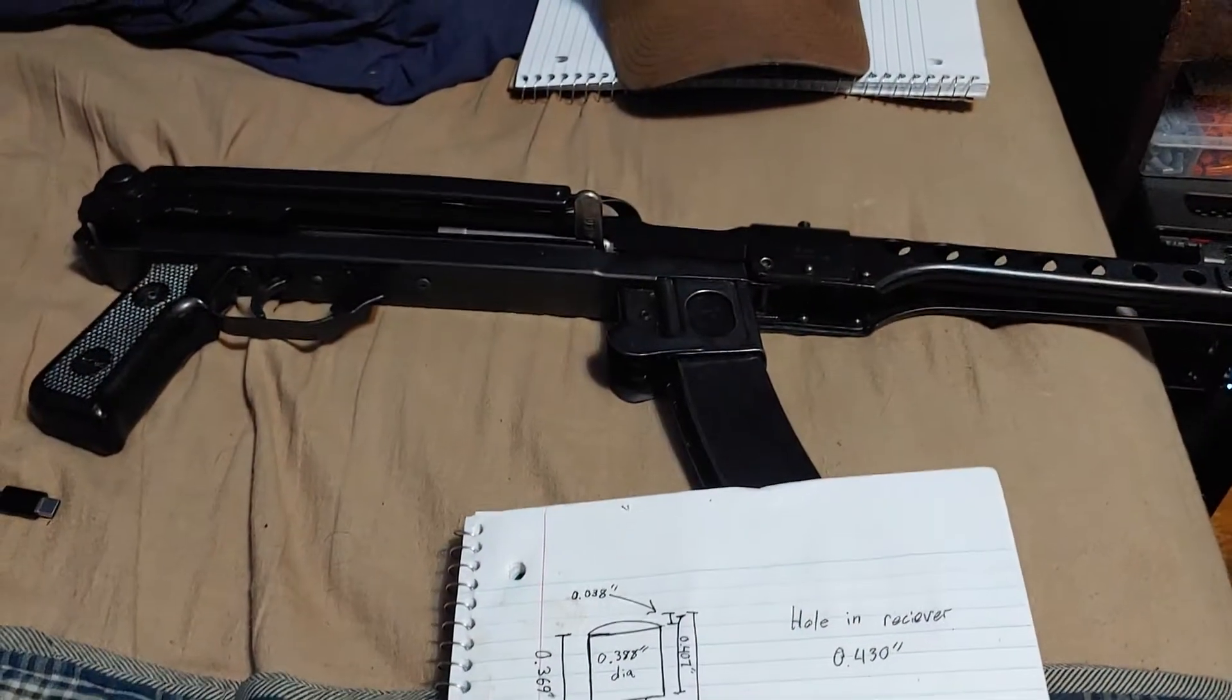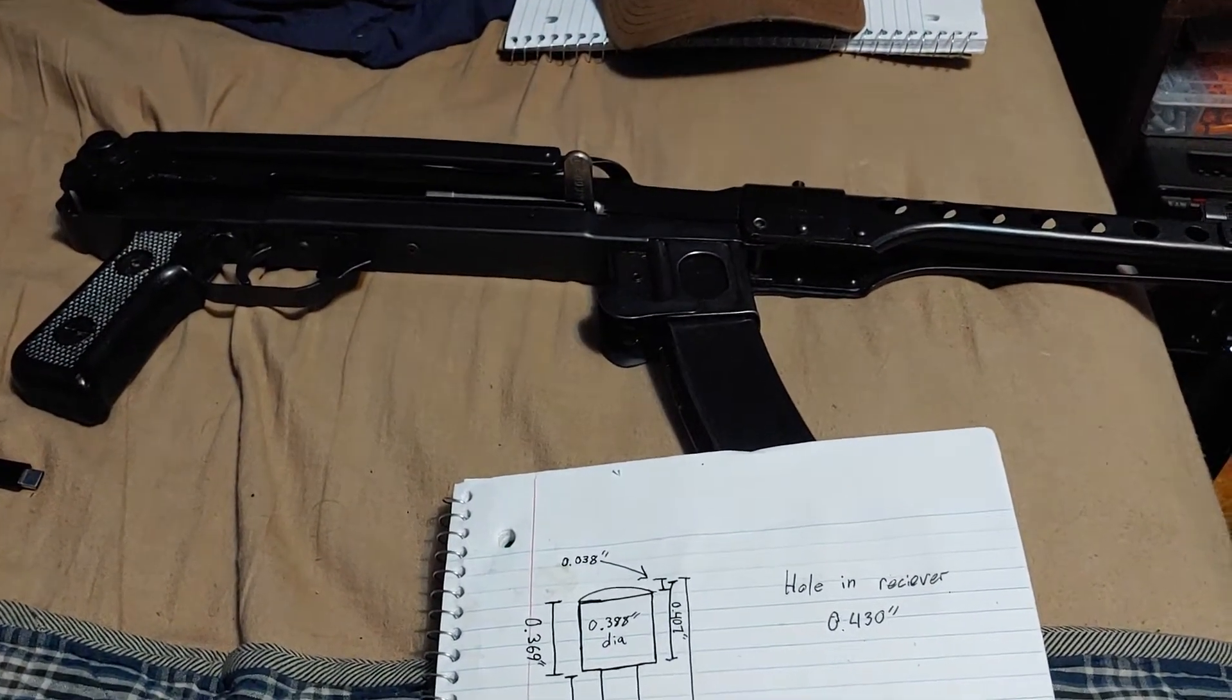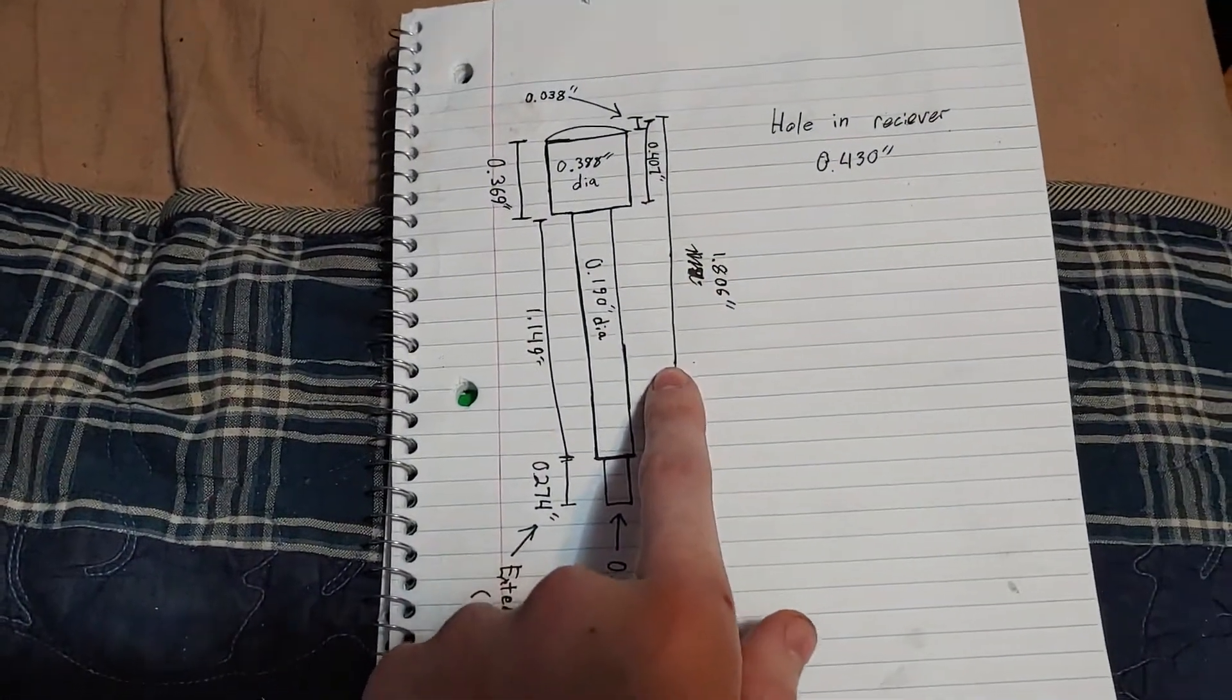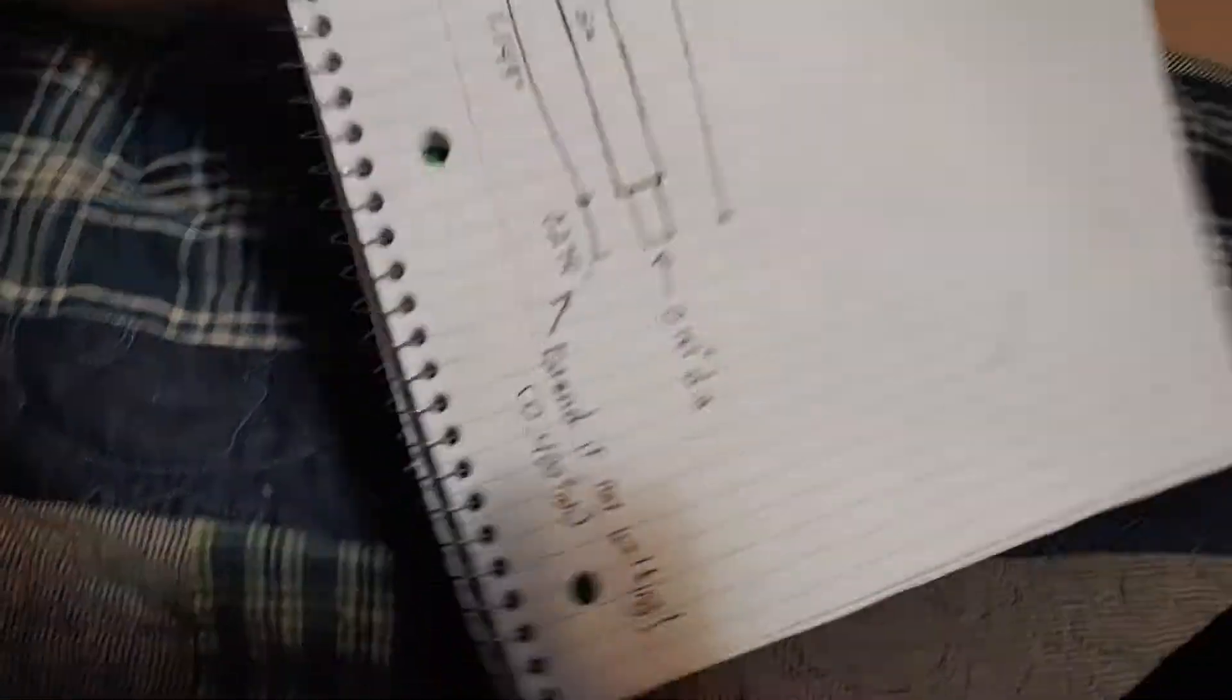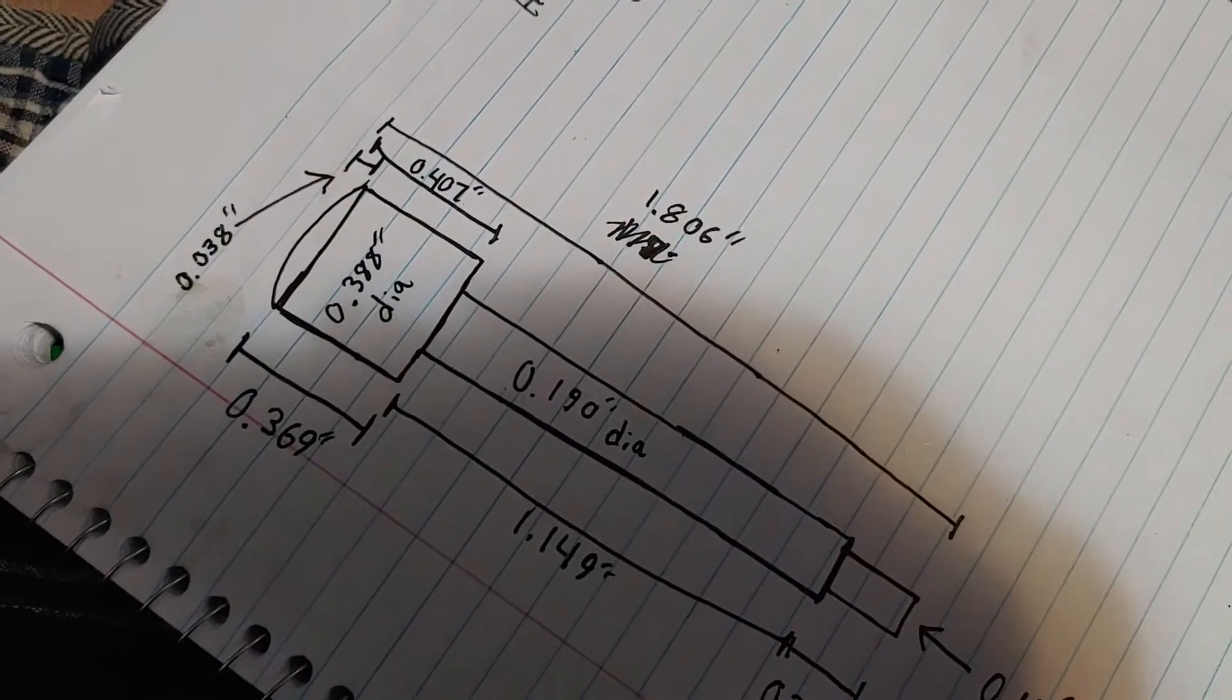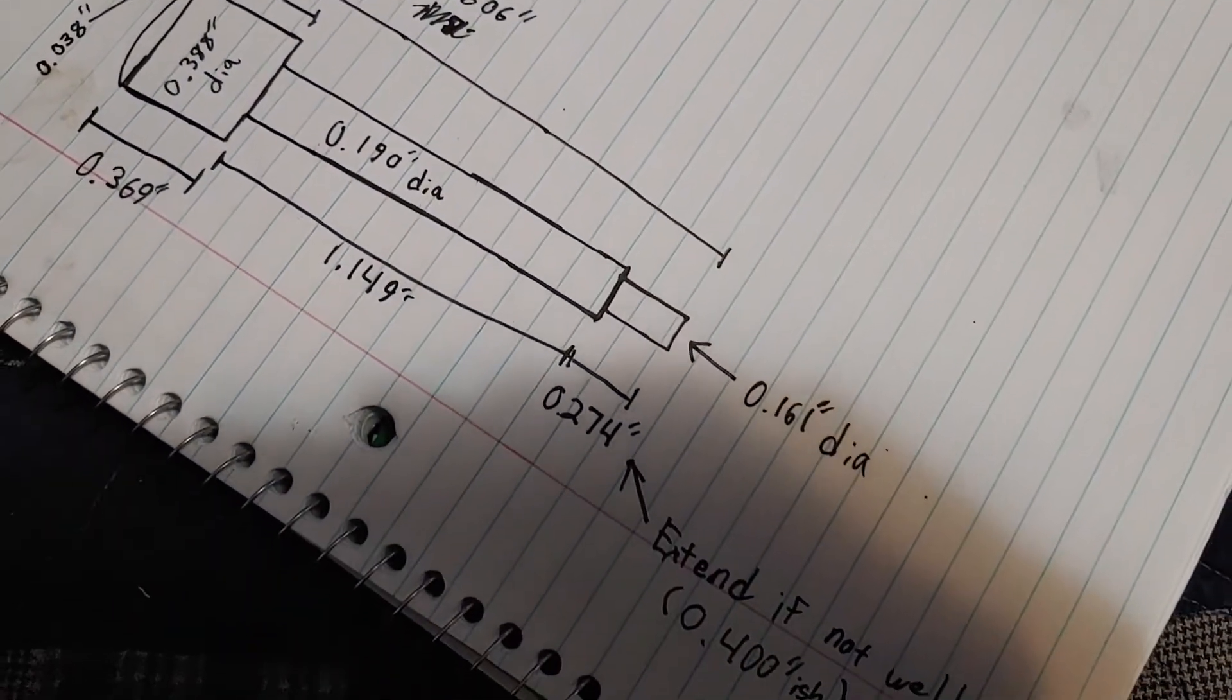Or if you have a Polish PPS-43C pistol and you're going to be converting it into an SBR. Now, do not manufacture this until you get your approved Form 1 back. I haven't done that. I don't have my approved Form 1 back, but these were measurements I was able to get digging around the internet long enough.